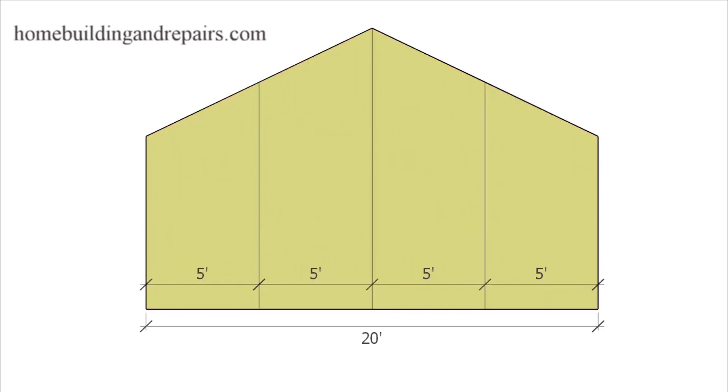So a quarter pitch roof is simply going to be one quarter of the width of the building as the total rise from the top plates. So not too difficult. We have a 20 foot span. We divide 20 by four. Then we come up with five foot increments to suggest that we have a one quarter roof pitch.